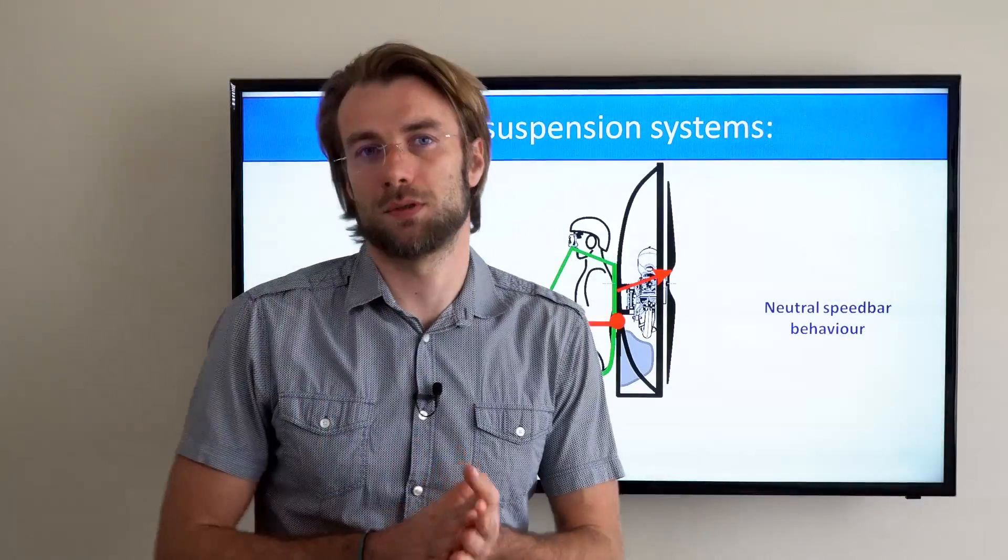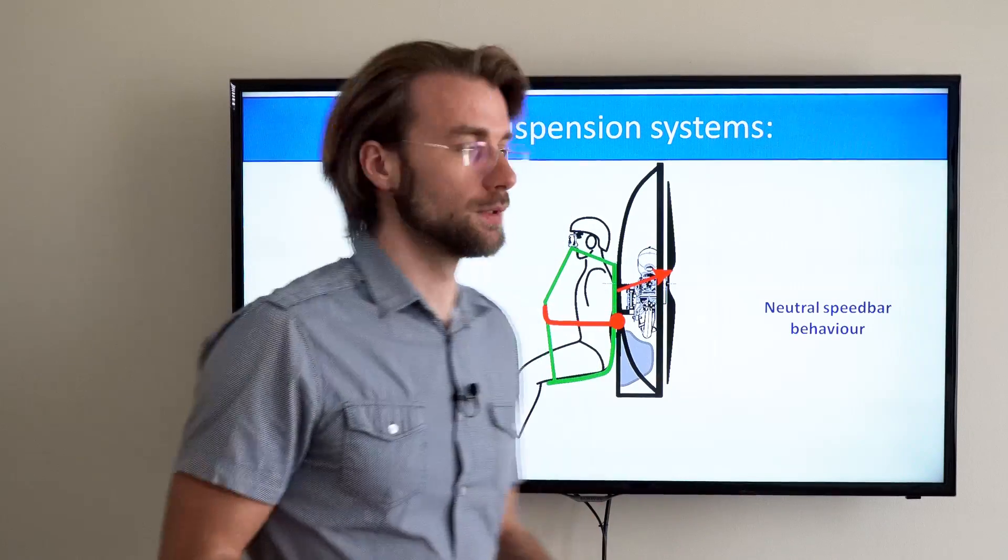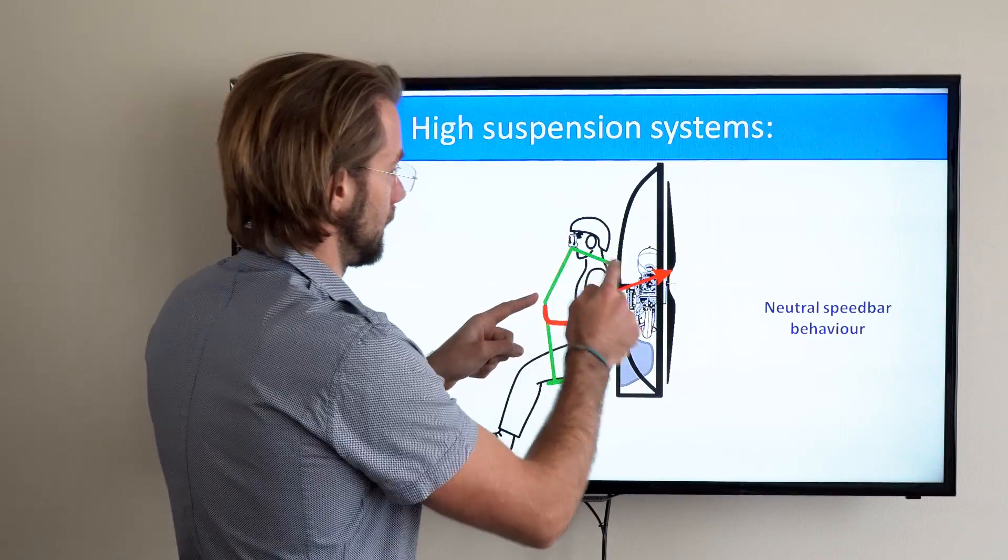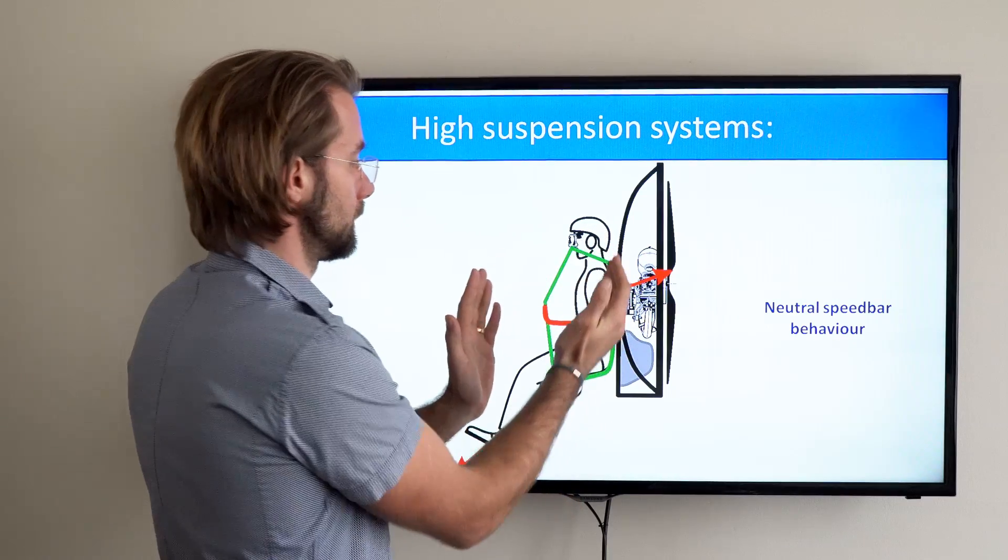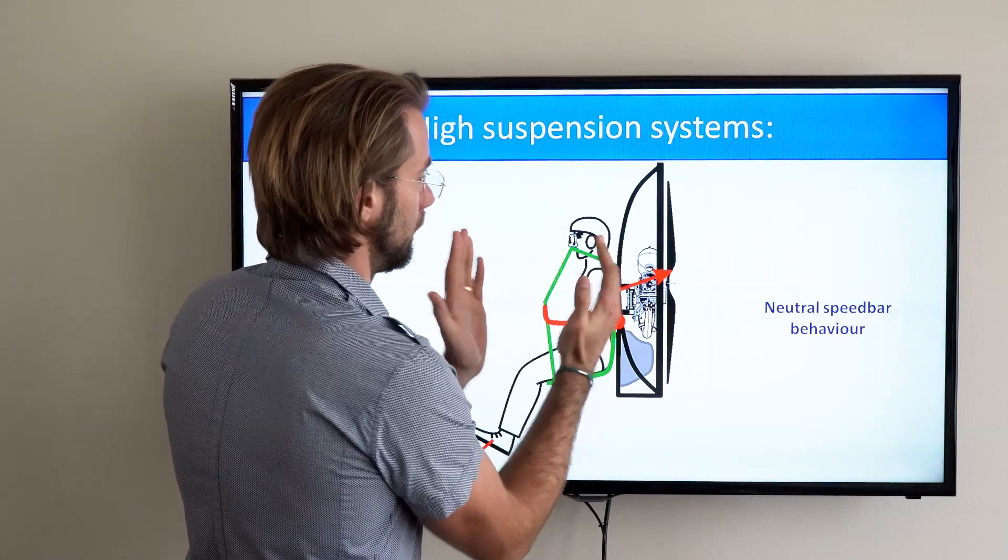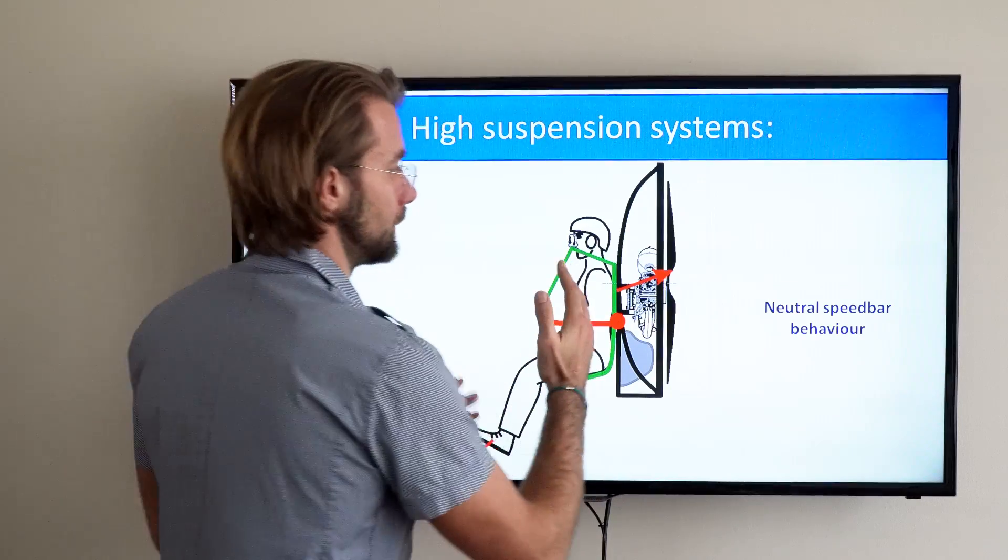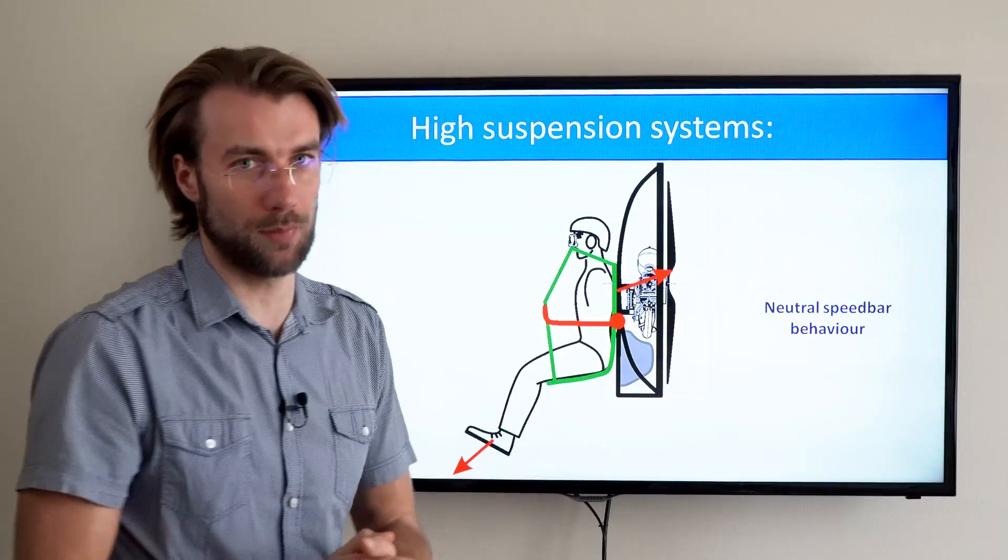High suspension systems behave neutral simply because all these straps are highly tensioned and the whole harness and the frame is pretty rigid. There is no tendency to lean backwards.